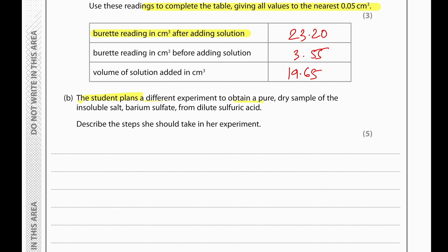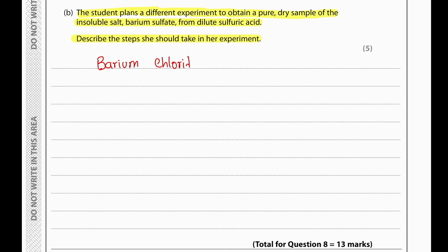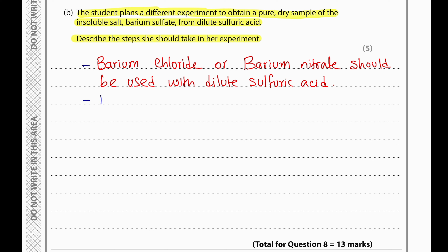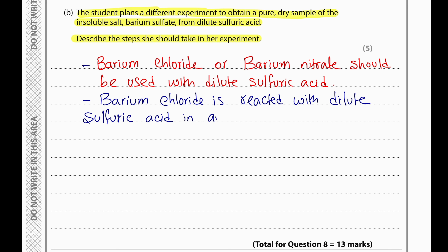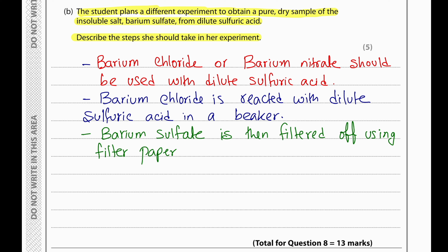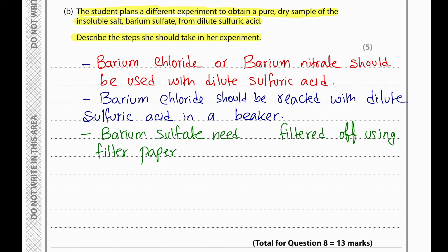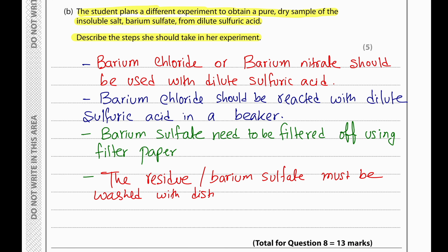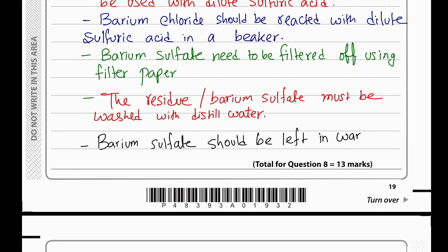To obtain the insoluble salt barium sulfate from dilute sulfuric acid: use a soluble barium compound such as barium chloride or barium nitrate, react it with dilute sulfuric acid to produce a precipitate of barium sulfate. Filter off the barium sulfate, wash the residue with distilled water to remove impurities, then place it in an oven to dry.